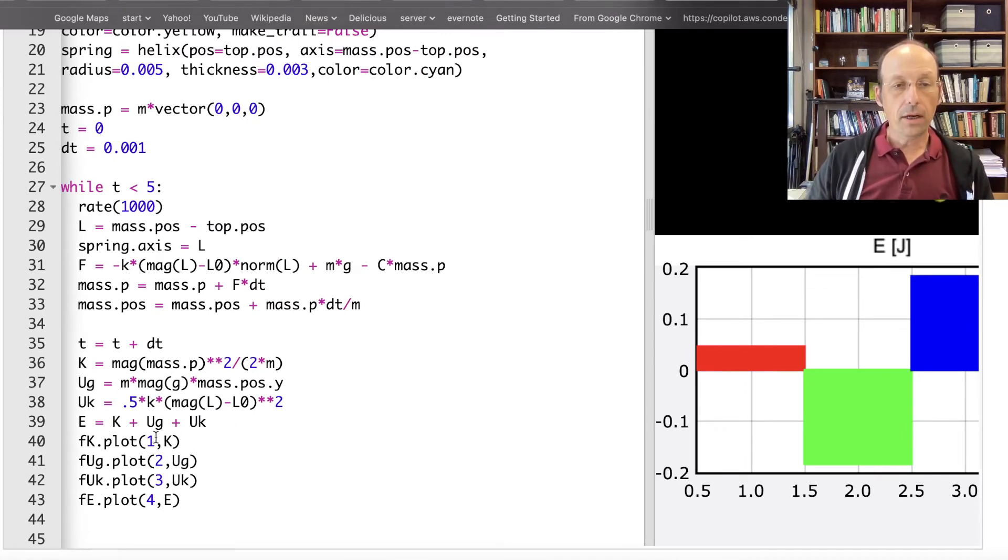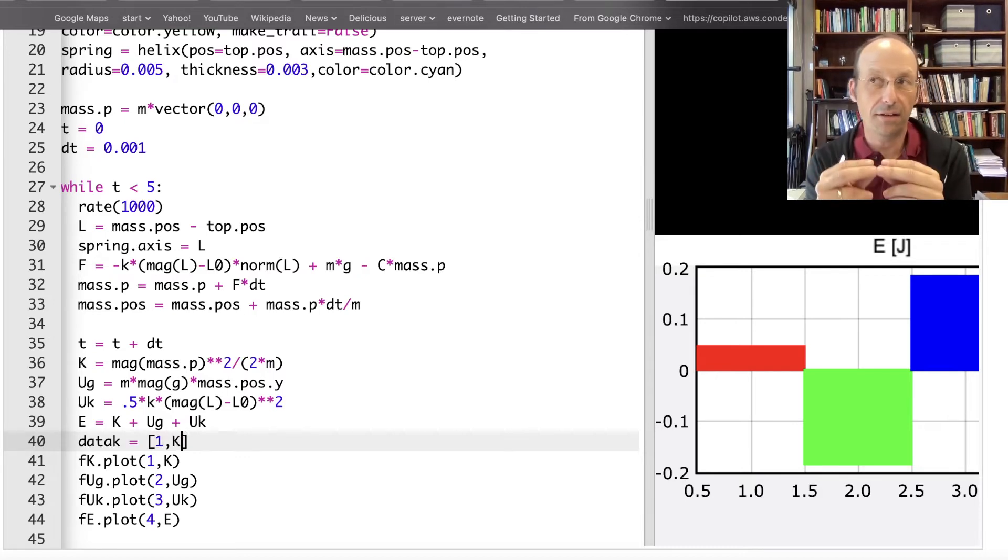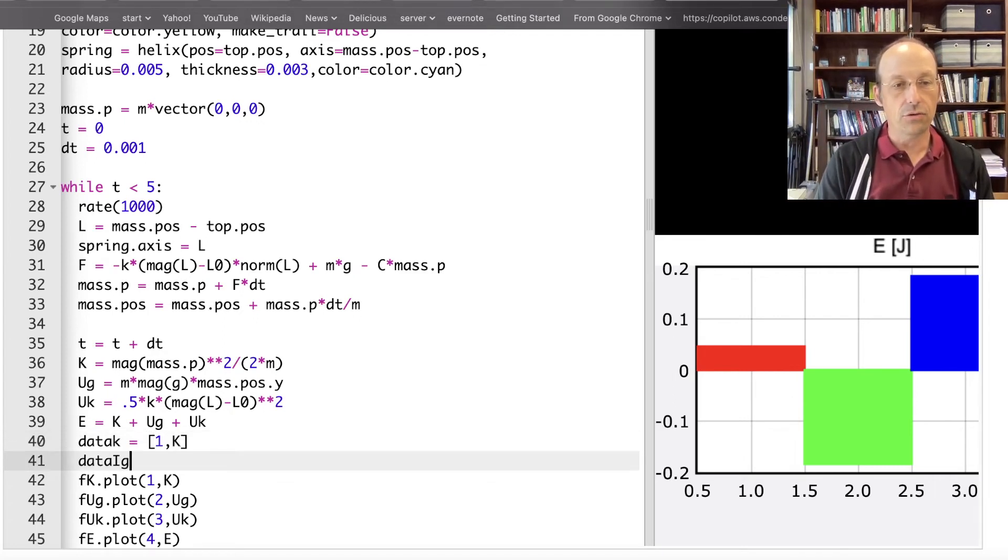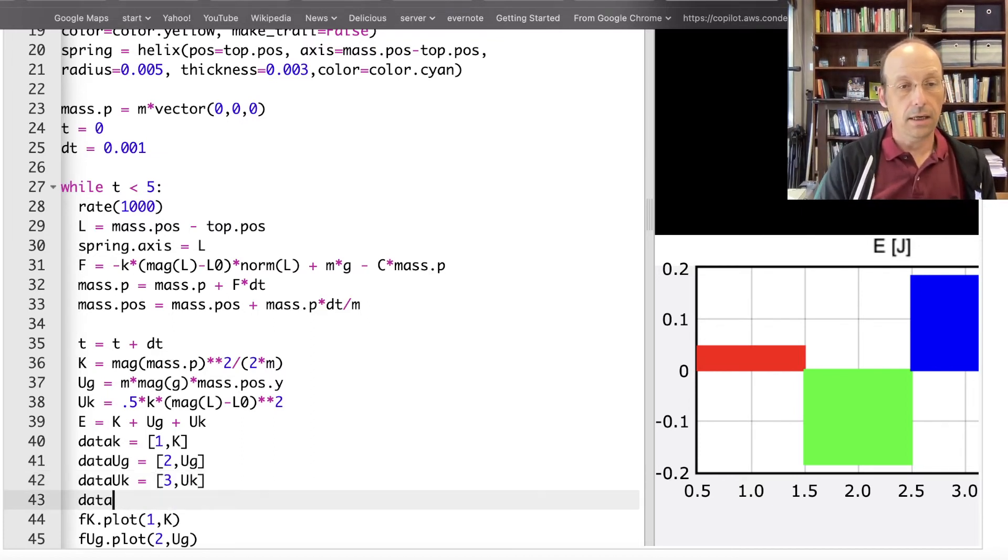So what I'm going to do is to put I can I can do the following data k equals a list one k It's a it's a list of just one data point and one thing and then I can do the same thing down here data ug I think this will work one or two ug data uk equals three and the one, two, and three is the position on the bar graph uk data e equals sorry there's four right four e